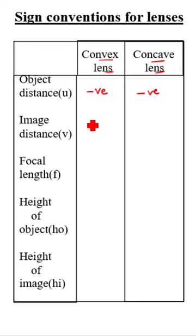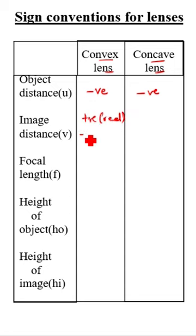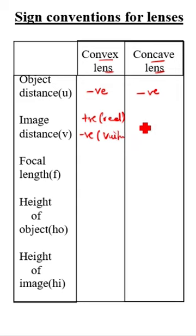Image distance V is positive for real, negative for virtual. Here it is negative.